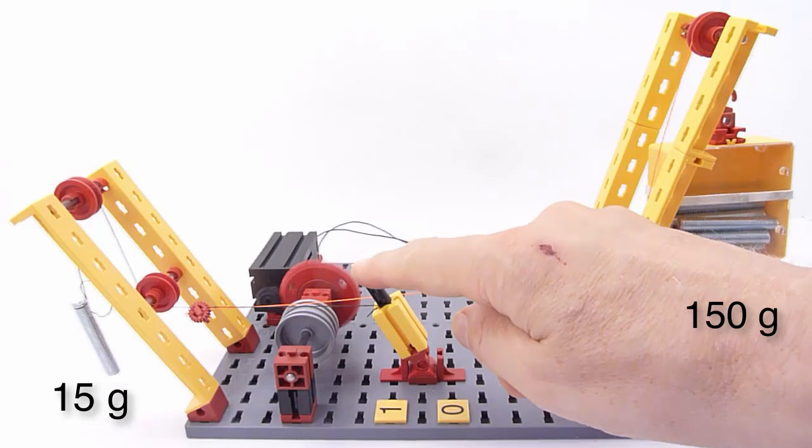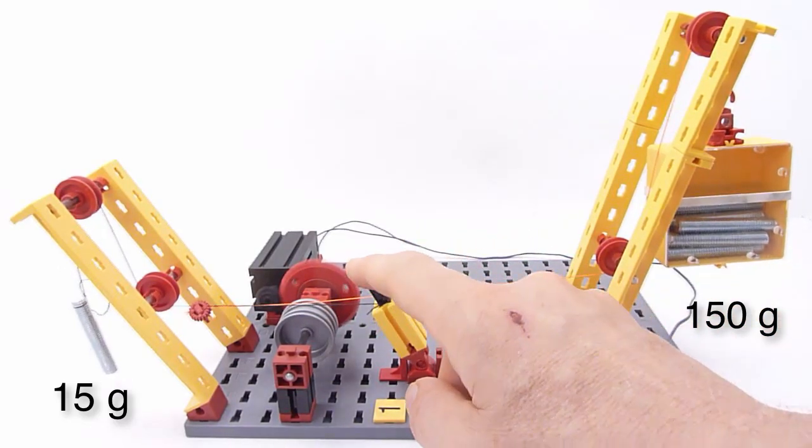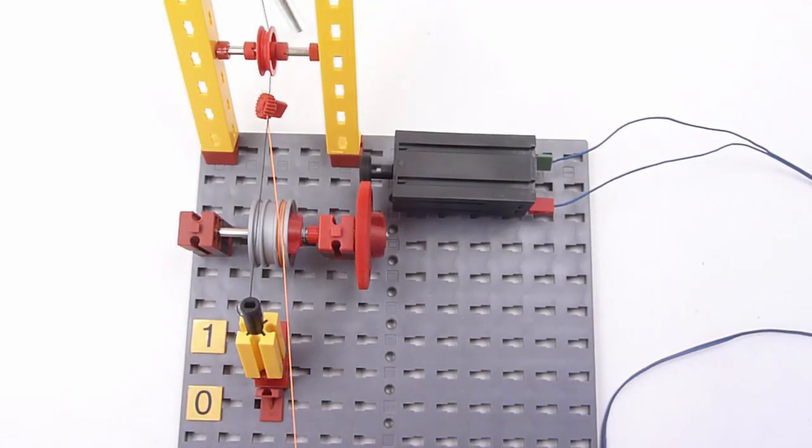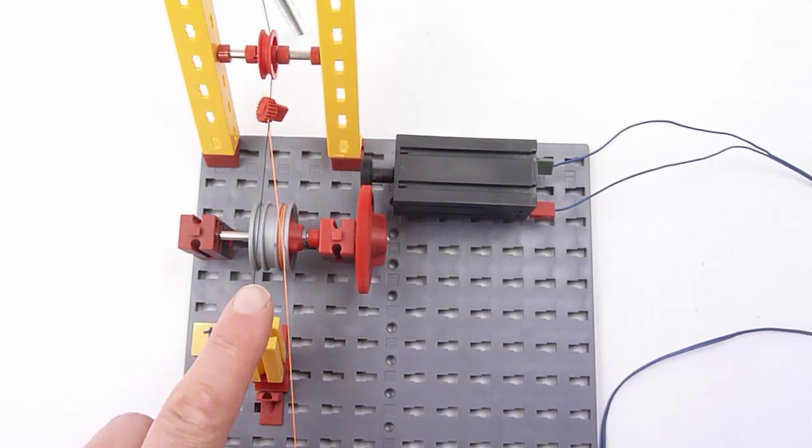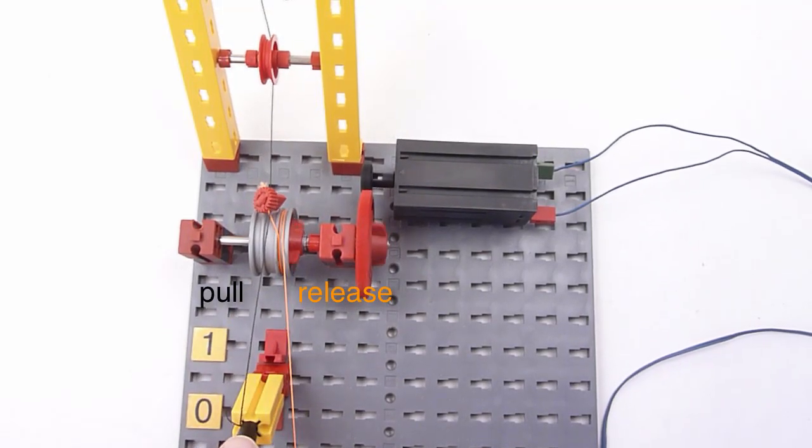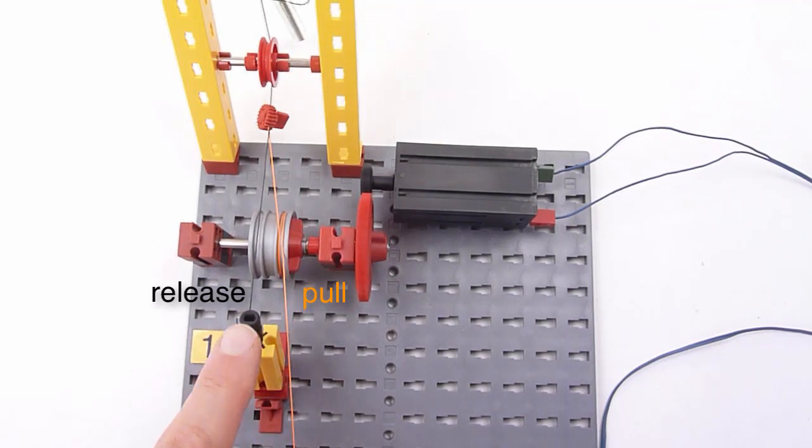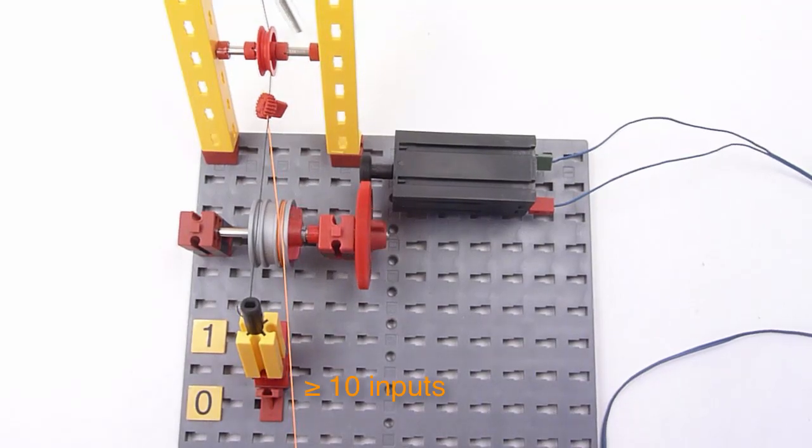The 15 grams on the left side can easily lift the 150 grams on the right side. The mechanism acts as an inverter. If you pull the lever, the orange string is released. If you release the lever, the weight can pull 10 or even more inputs down to zero.